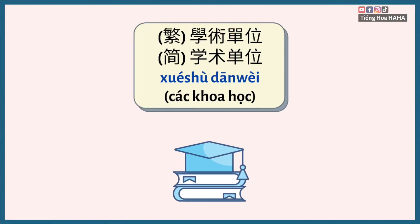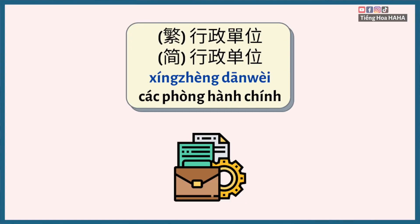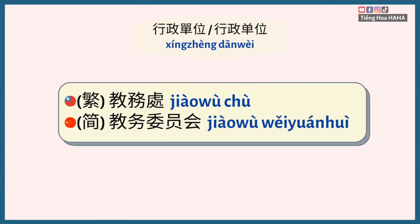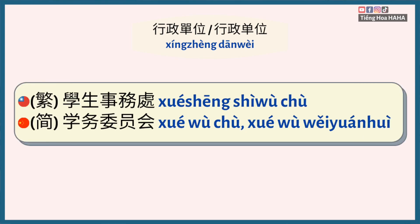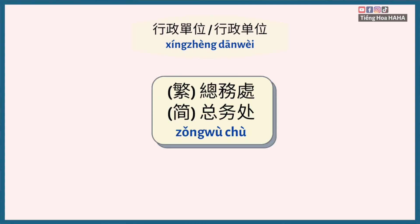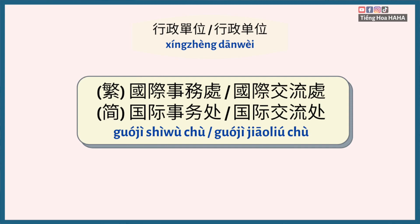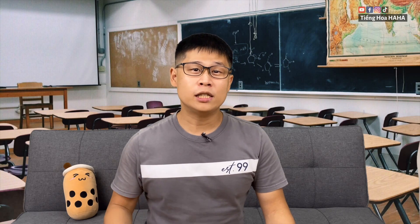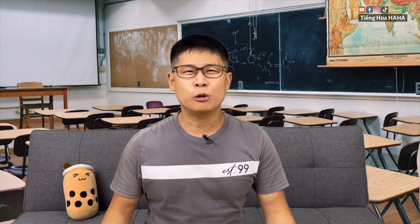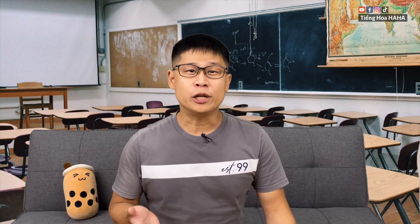學術單位跟行政單位。行政單位一般有教務處、教務委員會、學生事務處、學務委員會、總務處、國際事務處、國際交流處。學術單位則會依照每個學校的性質而有所不同，我拿我的母校來當範例吧。